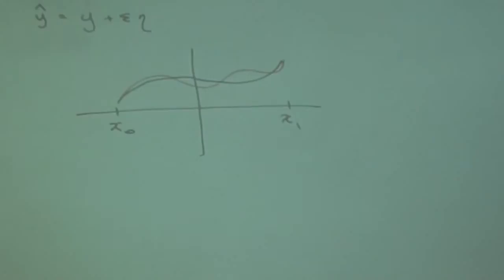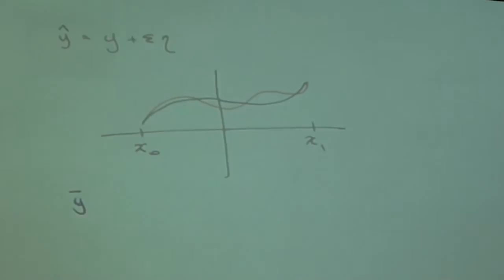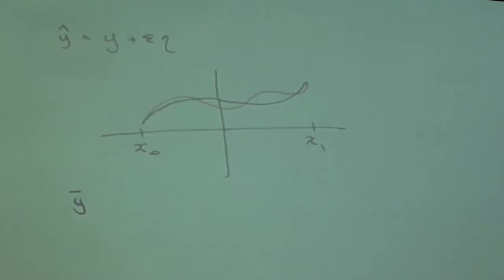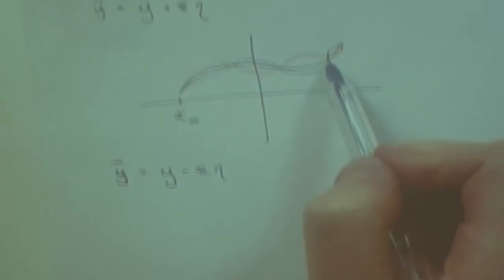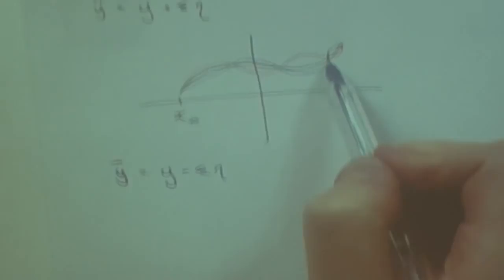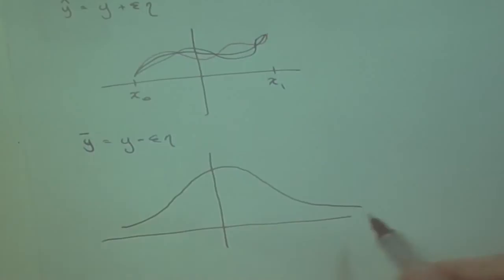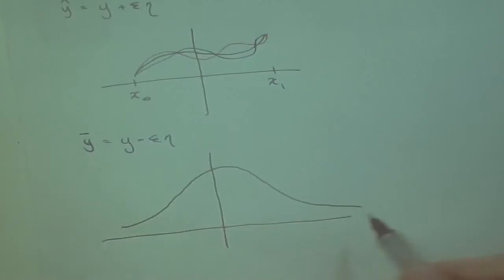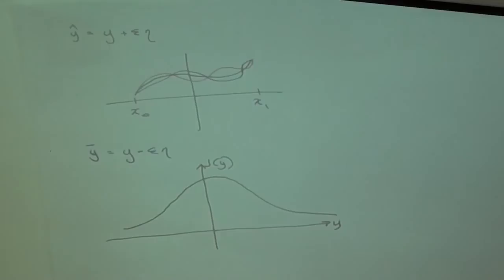Because of the way we defined the set containing eta, if eta is in the set then −eta is also in the set. So we can also have an alternate perturbation y_bar = y − ε·η. Both y_hat and y_bar are something close to y but not exactly y. I'm going to sketch this as if J(y) were a function value on an axis, just for visual purposes, even though it's actually a functional.